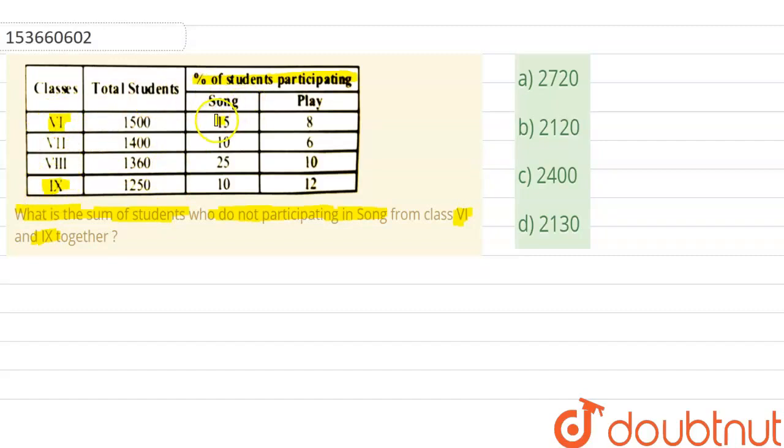We'll look at the number of students who participate in song. The table shows students participating in song for each class. For class 6, we need to find those not participating. So 85% are not participating in class 6.